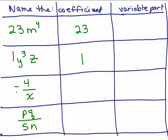Let's look at the third one, negative 4 over x. All there is is a negative and a 4. There's nothing in the denominator, so the coefficient is negative 4. And it's a little bit tricky for the fourth one. You see a 5 in the denominator, so it's a fraction. So you have to think about that as being a 1 in the numerator so that the coefficient is 1/5. This means you could write this as 1/5 times pq over n.